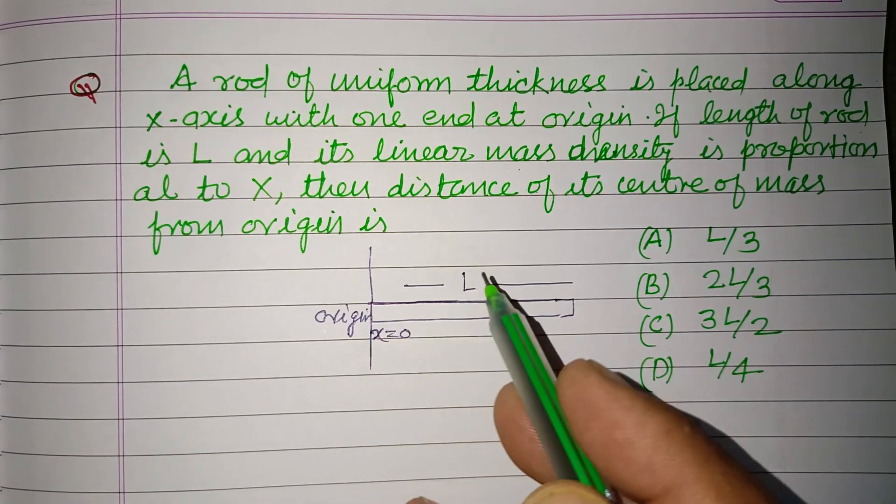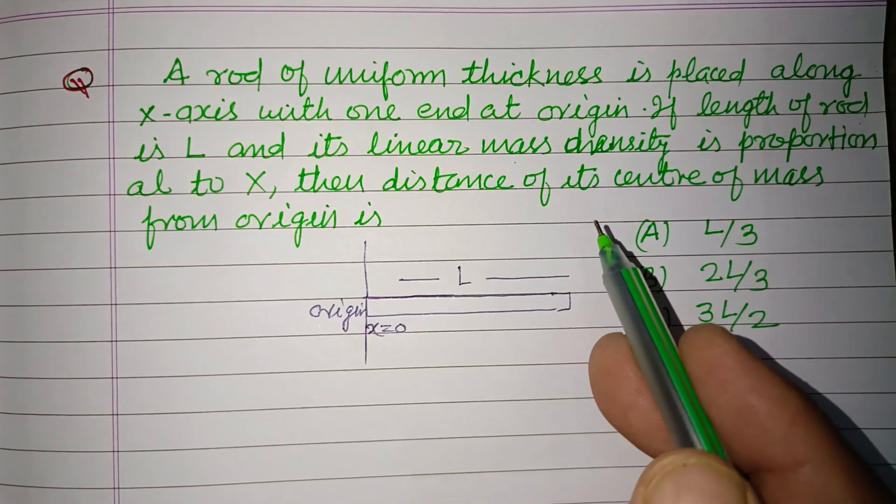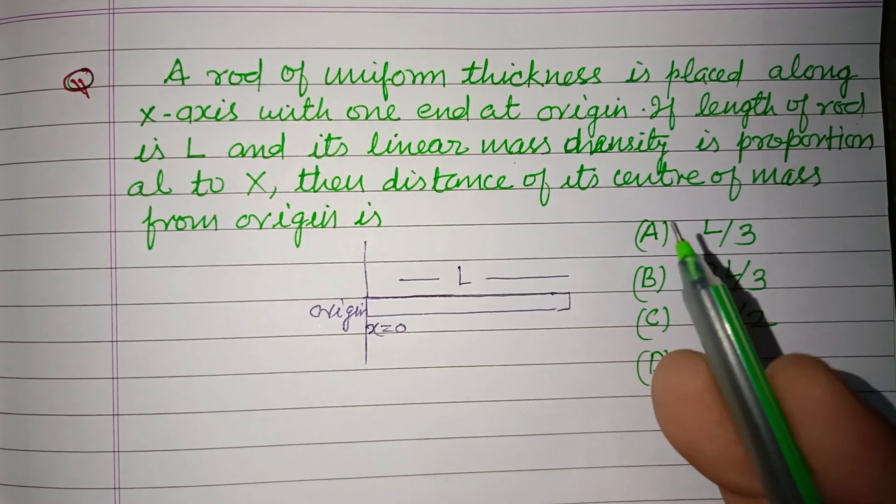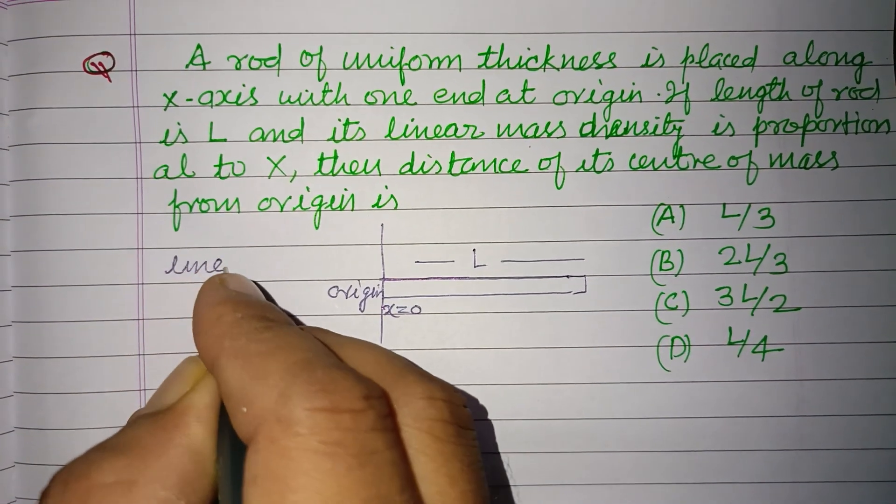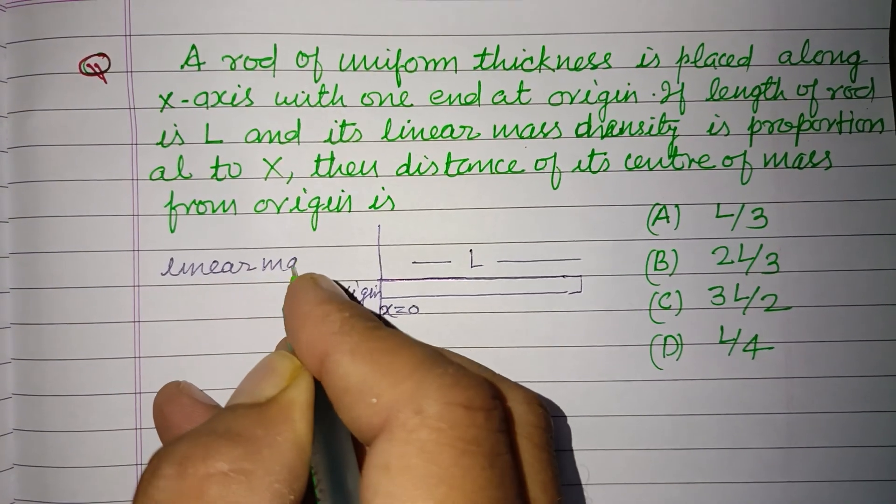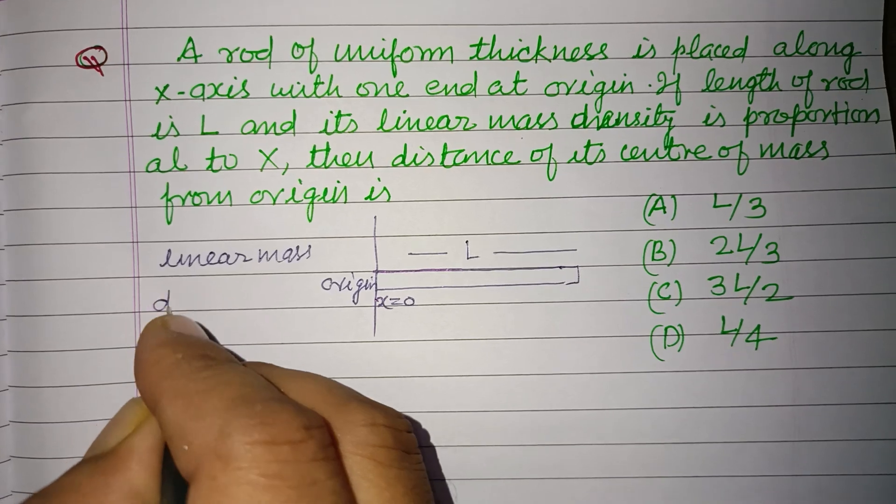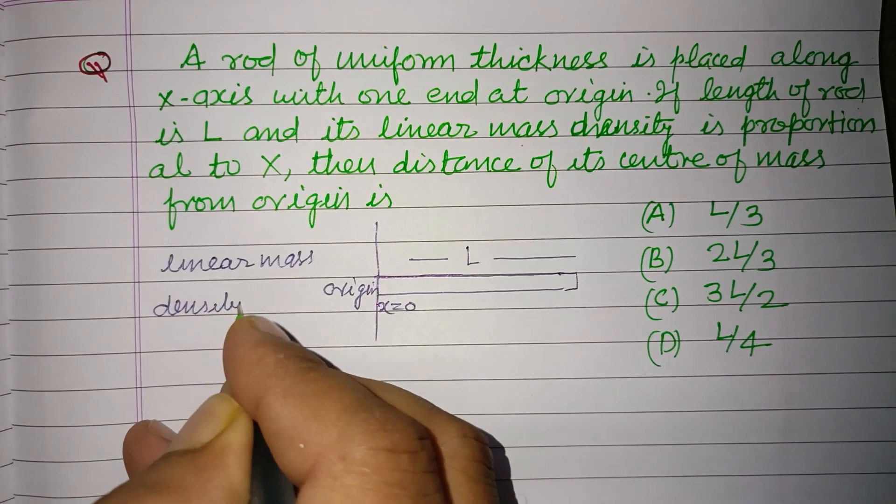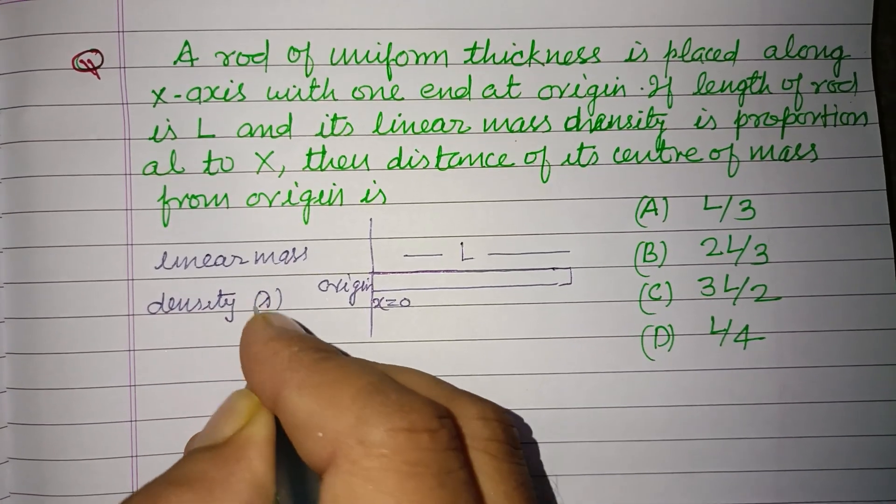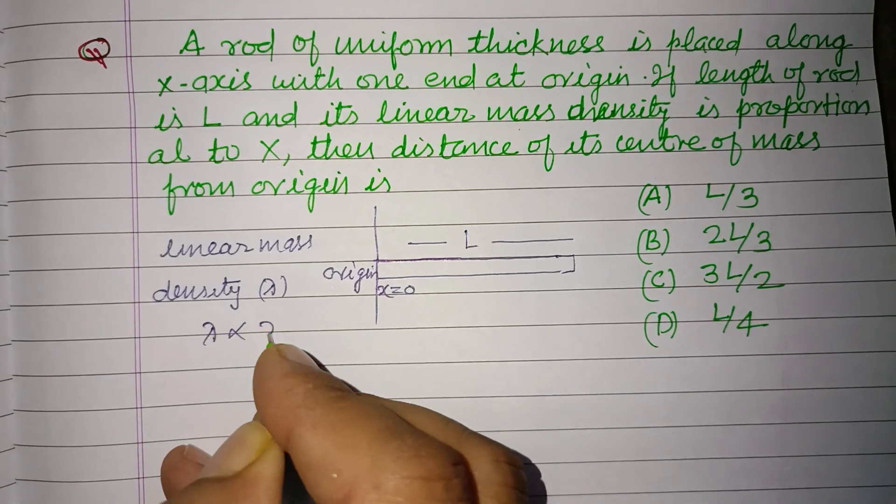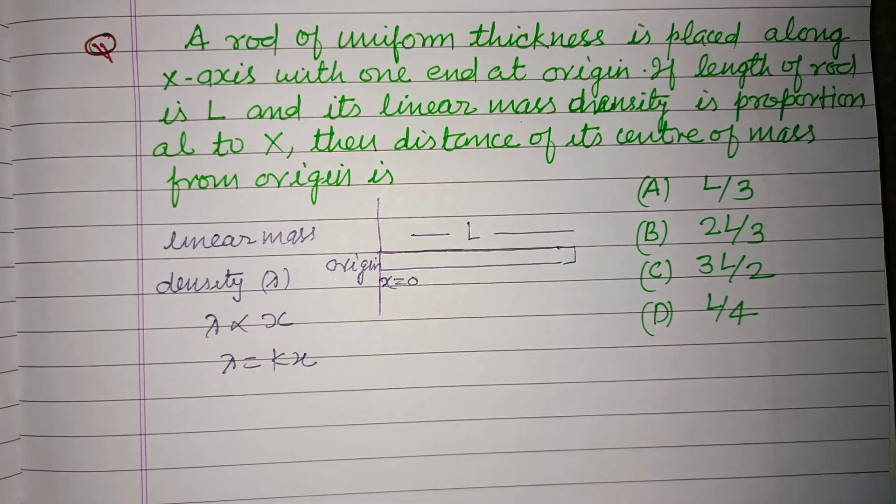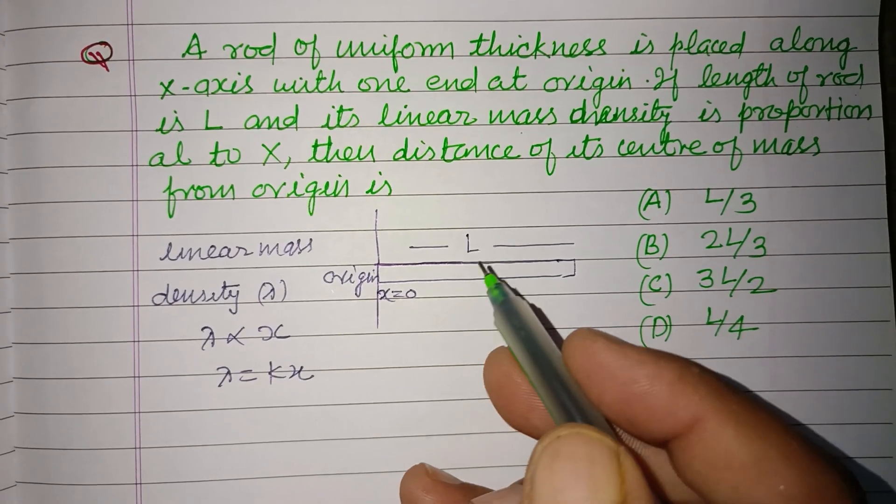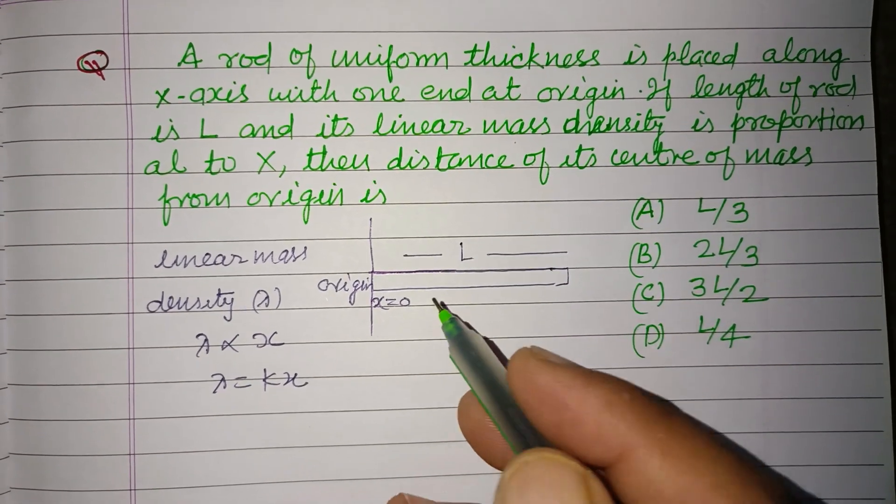If length of rod is L and its linear mass density is proportional to x, so linear mass density lambda is directly proportional to x, so lambda equal to kx. Then distance of its center of mass from origin.